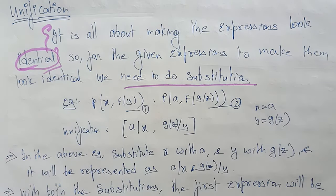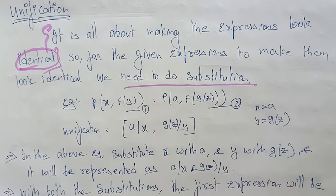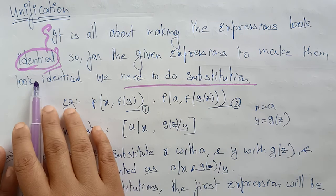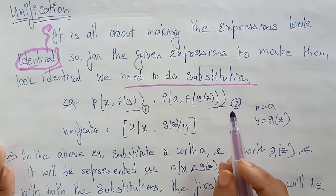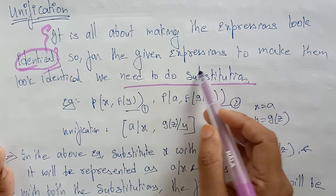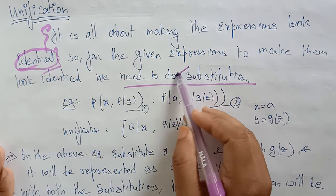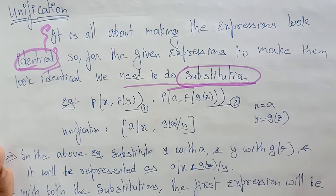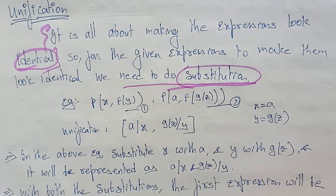Whatever we learn in first order logic, we are using the equality symbol and the substitution symbol to make things identical. So in unification also, it is all about making expressions look identical. To make the expressions look identical, we follow the technique of substitution. With the help of substitutions, you are making the expressions look identical. Let's see how that is possible.